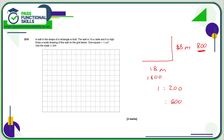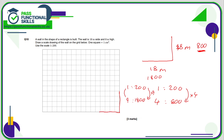With the scale 1 to 200, every 1 centimeter on the drawing represents 200 centimeters in real life. How many 200s are in 800? That's 4, so we need a height of 4 centimeters. How many 200s are in 1800? That's 9, so we need a width of 9 centimeters. We draw the rectangle 4 squares high and 9 squares wide on the grid — it doesn't matter where on the grid you draw it.